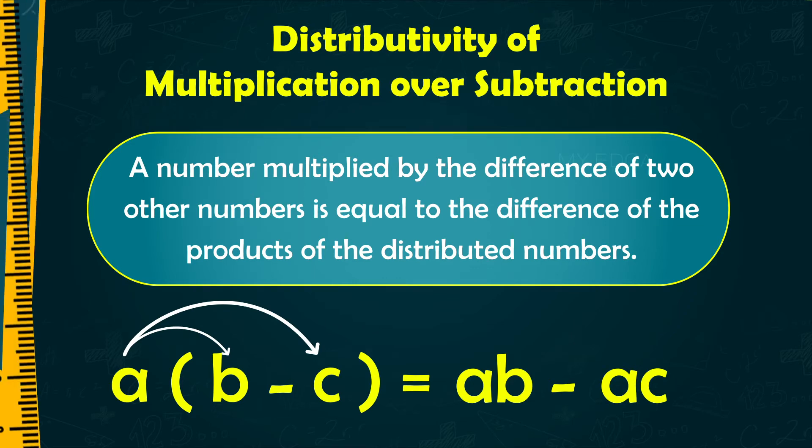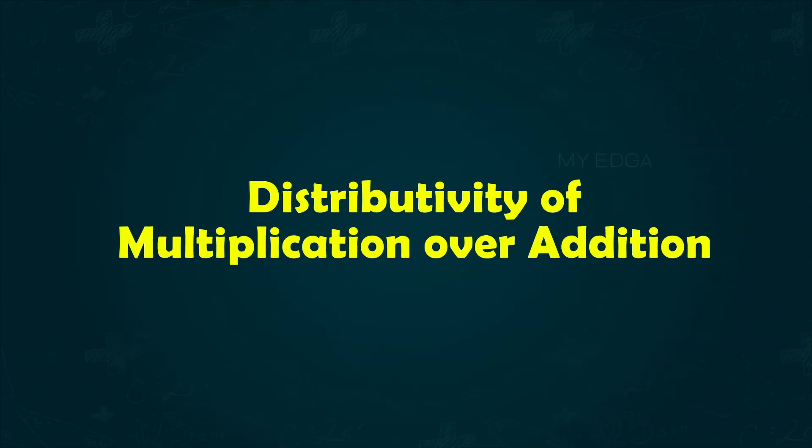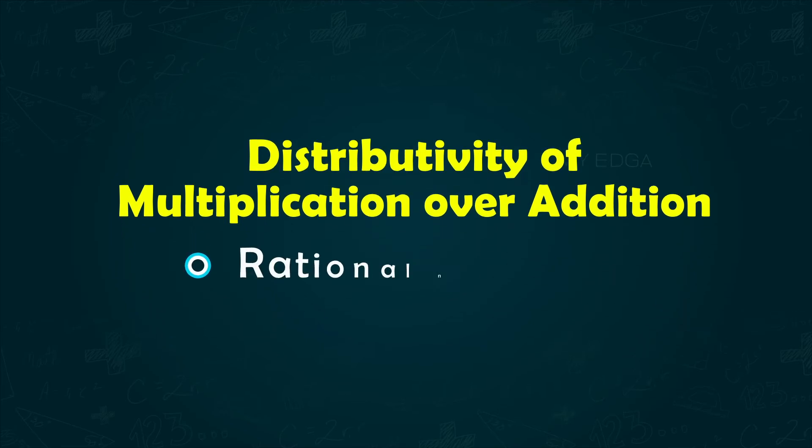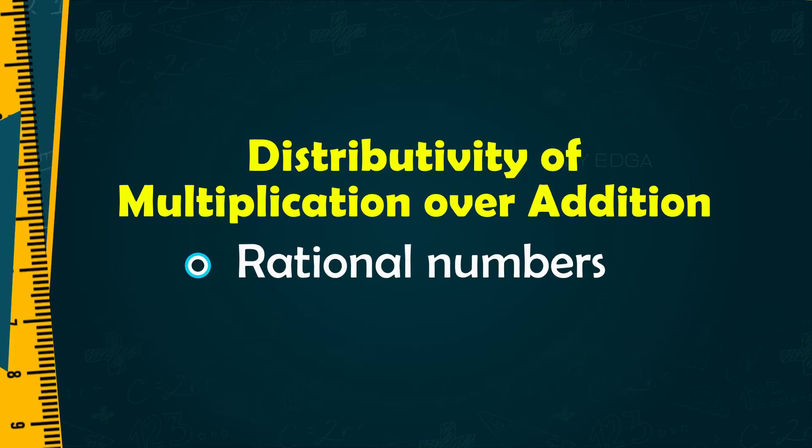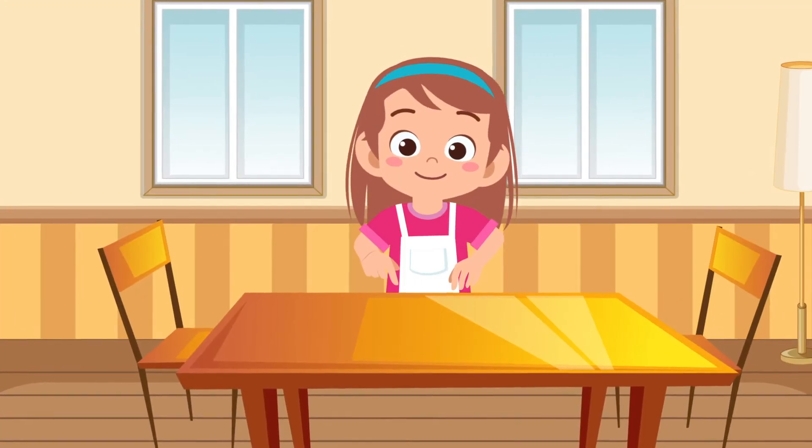Now we will discuss how distributive property over addition works for rational numbers. Let's illustrate it with an example.